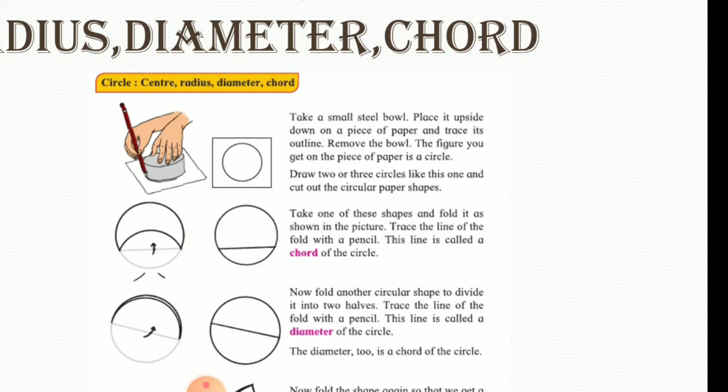When you open it, you will see that the line formed is a long line which is crossing the center of the circle and it is dividing the circle into two halves. Now this is known as the diameter of the circle.